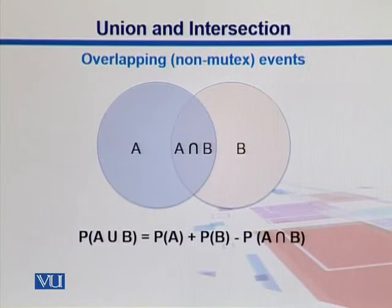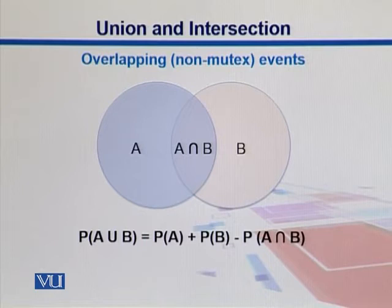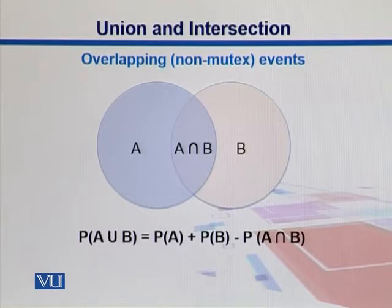In case of overlapping or non-mutually exclusive events, we can see the intersections. If we take the union, we add their individual probabilities but we need to remove the part which is common to both. So we take their union as: P(A ∪ B) = P(A) + P(B) − P(A ∩ B).